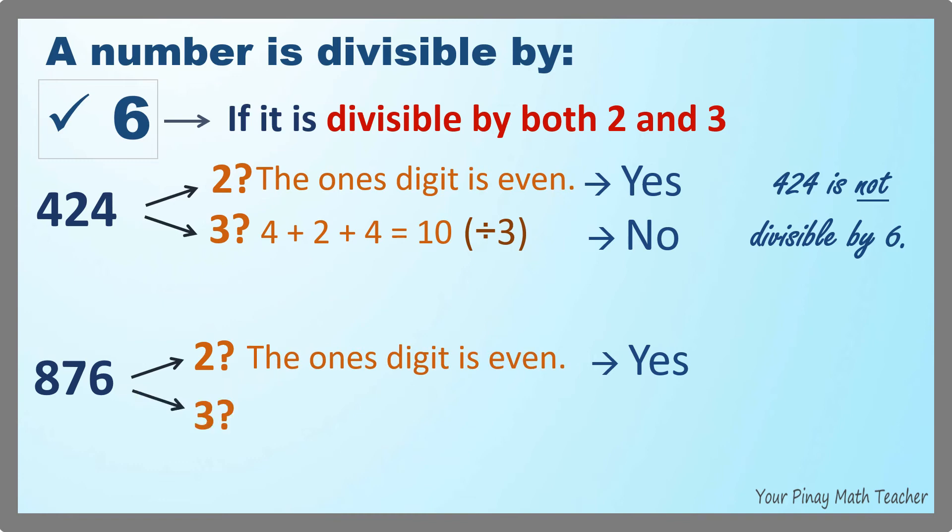Is this divisible by 3? Let's add up 8, 7, and 6. Oh, the sum is 21. Is 21 divisible by 3? Yes. Since 876 is divisible by both 2 and 3, then it is divisible by 6.